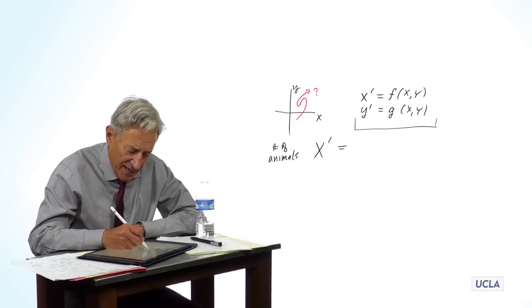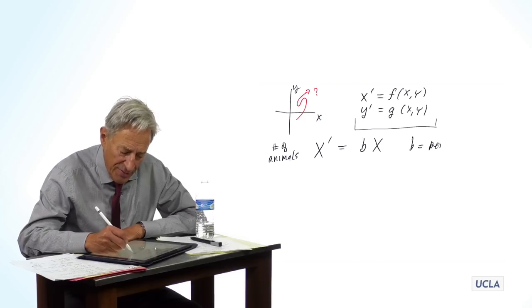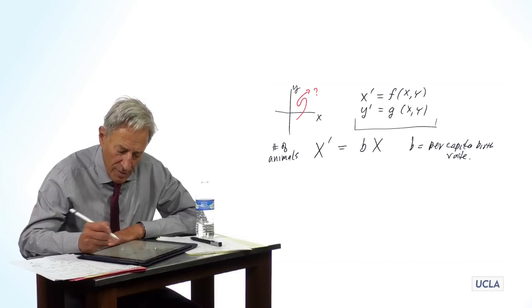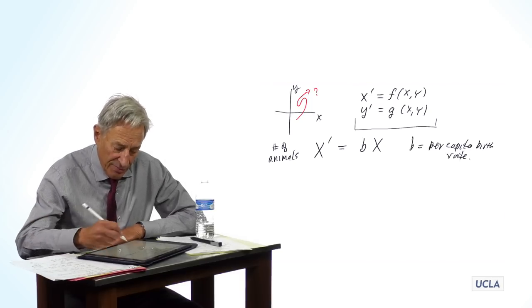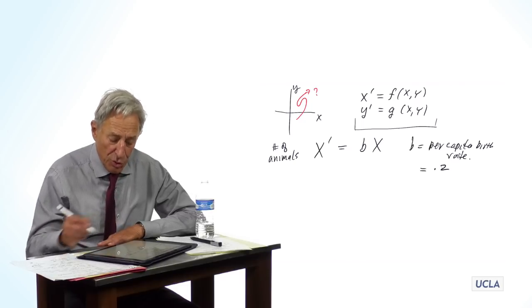And we said x prime equals bx, where b is the per capita birth rate. And let's just say for this present example it's 0.2.